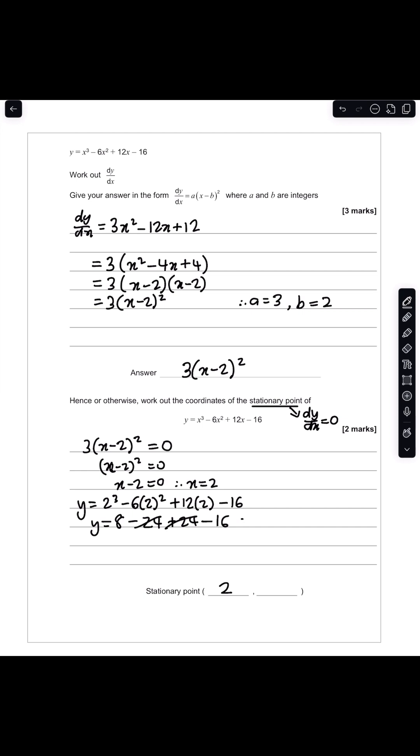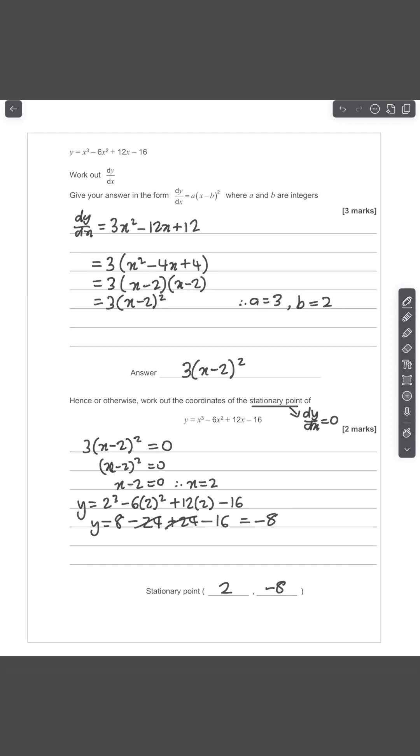So you're simply left with 8 - 16, which is -8. So your stationary point, or the y coordinate of your stationary point, is -8. And so your stationary point is (2, -8).